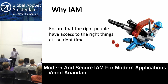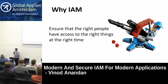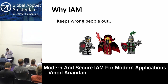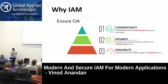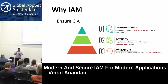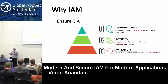So why do we need IAM? IAM will help us ensure that the right people have access to the right things at the right time. It is very important that right people have access to the right things at the right time. It will also help us keep the wrong people out. In fact, IAM is there to ensure CIA — confidentiality, integrity, and availability. You need a proper, secure IAM in order to ensure confidentiality, integrity, and availability.